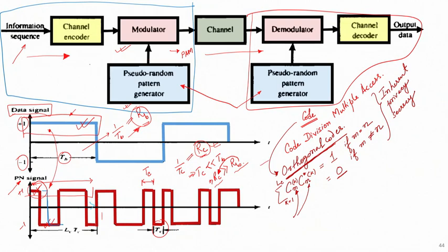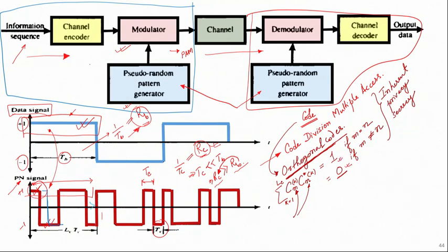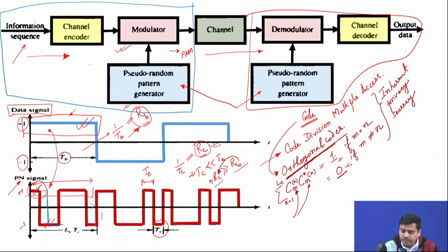We also briefly discussed codes. There are orthogonal codes where, if two different codes with different code indexes are used, the summation result is 1 only when the code indexes are the same; otherwise it is 0. There are also codes with very small cross-correlation and very good auto-correlation properties, where using the same code gives a high value and using other codes gives a very small value.